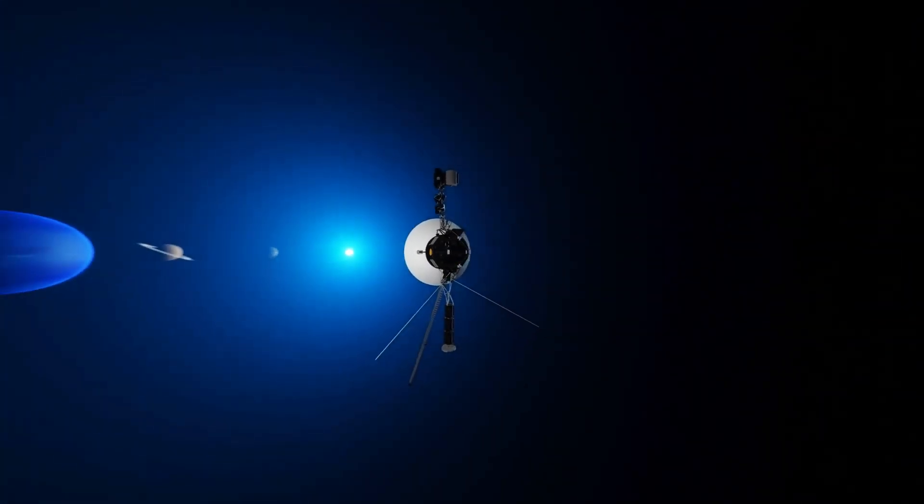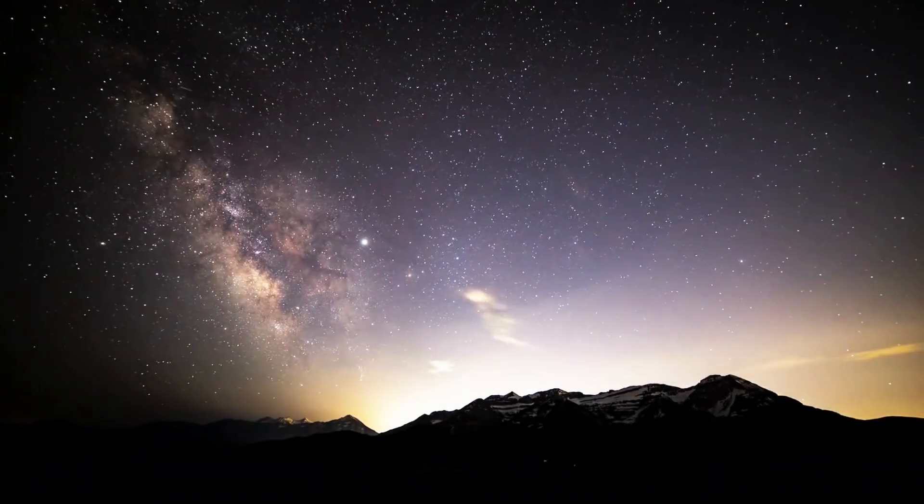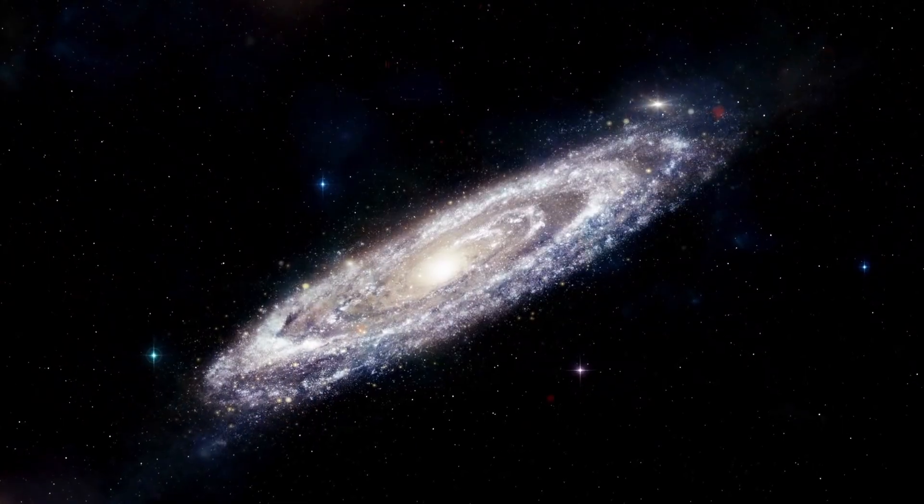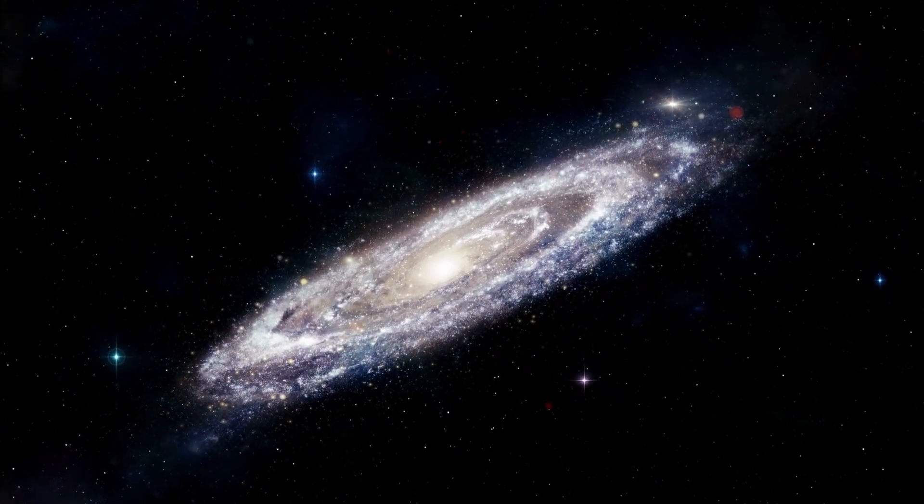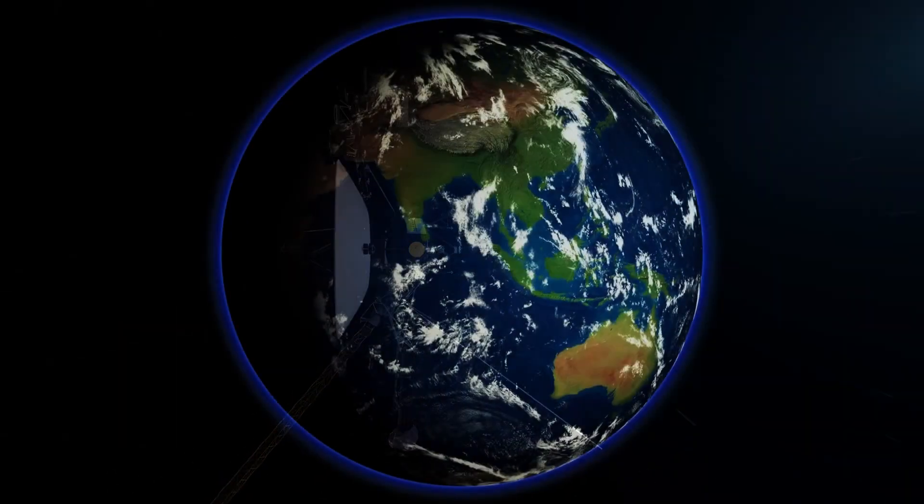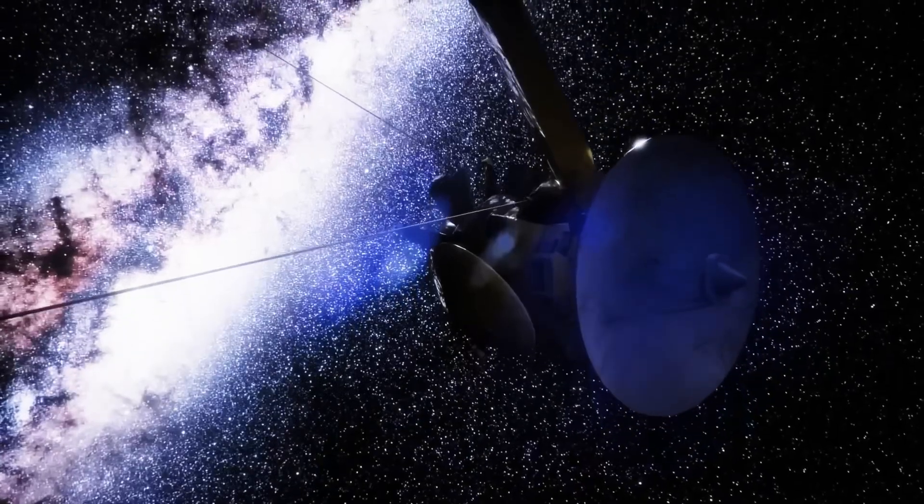Its counterpart, Voyager 2, is moving at 3.1 astronomical units per year and is expected to approach Ross 248, a star in the Andromeda constellation, within 40,000 years. Presently, Voyager 1 is roughly 15.5 billion miles from Earth, while Voyager 2 is 12.4 billion miles away.